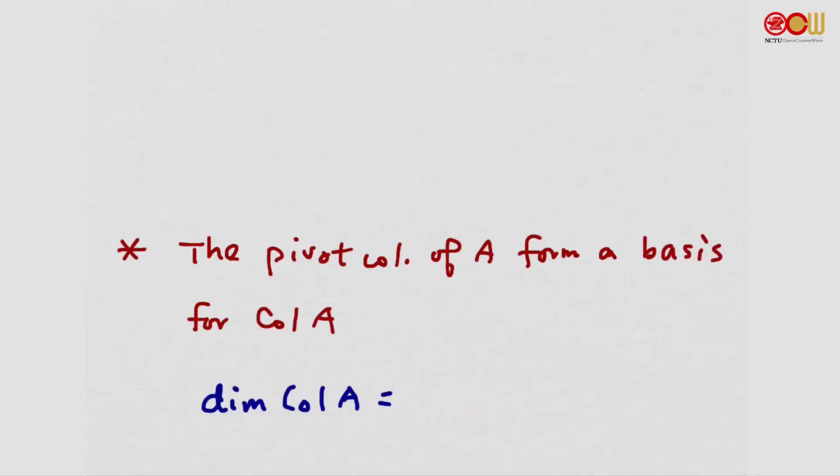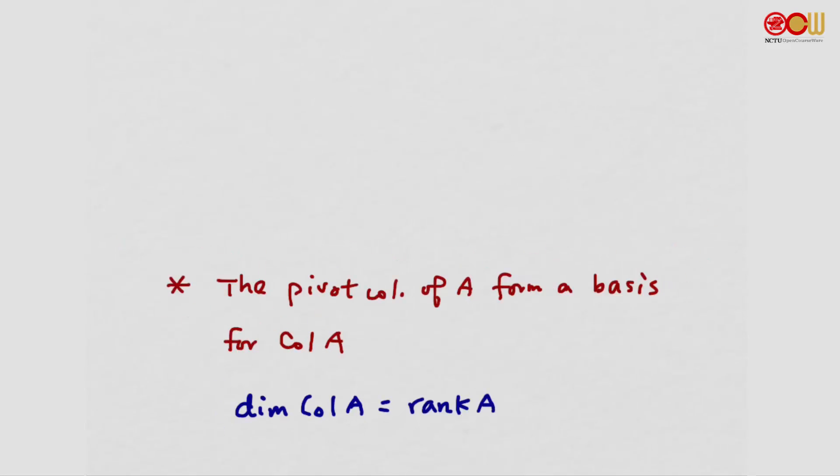How about the dimension of the column space of A? The dimension of a subspace is the number of vectors in a basis. So how many pivot columns are there? The number of pivot columns equals the rank of A. Therefore, the dimension of the column space of A is simply the rank of A.